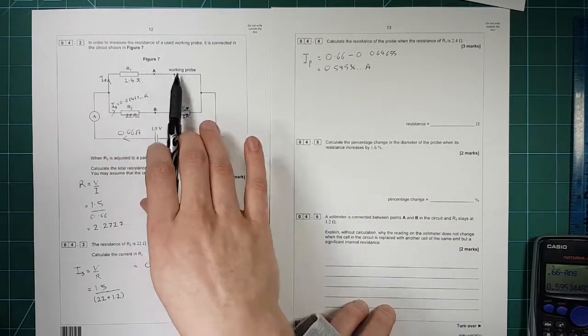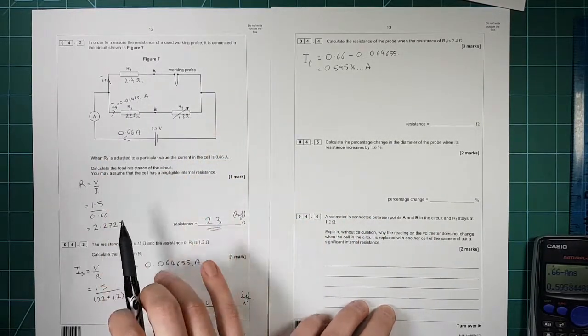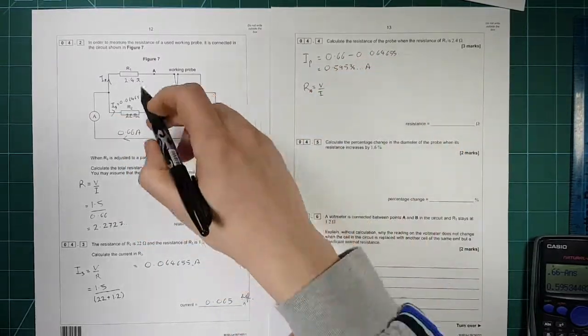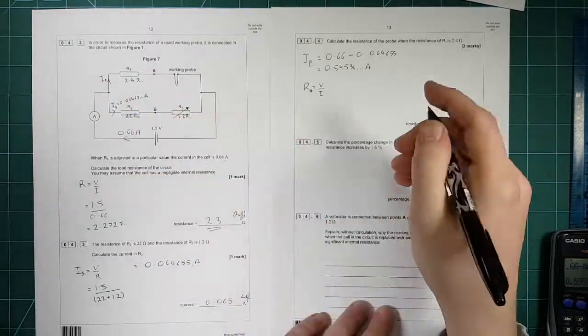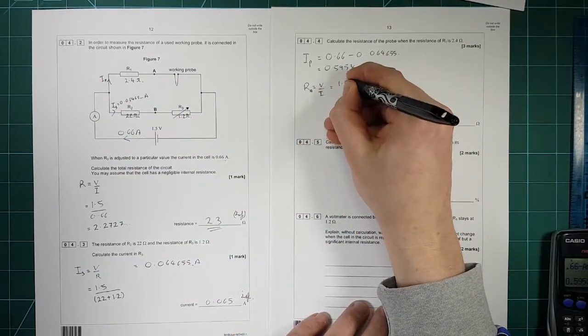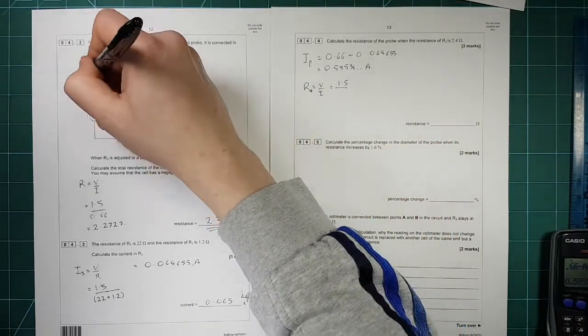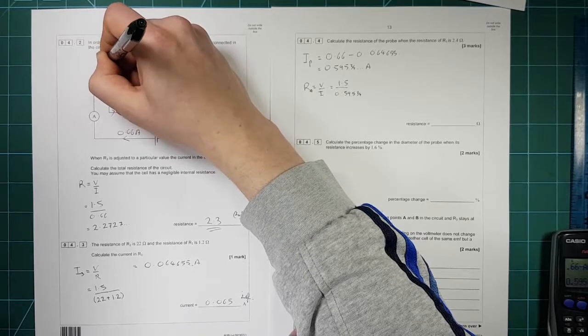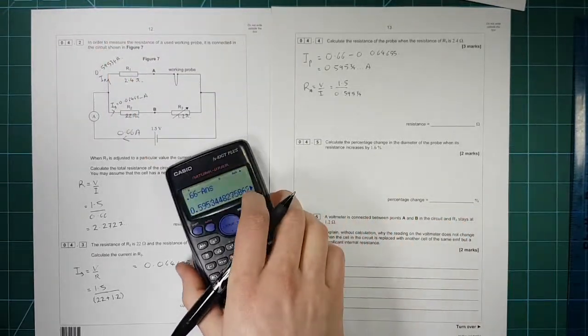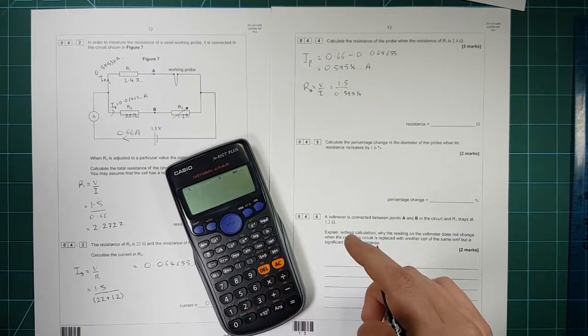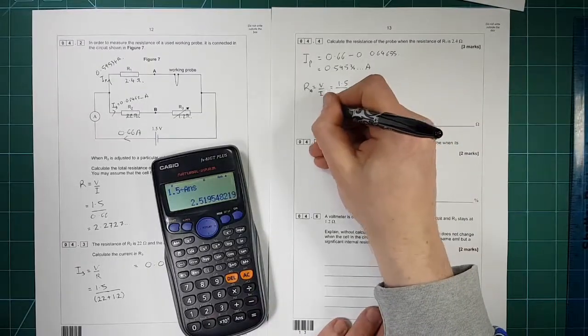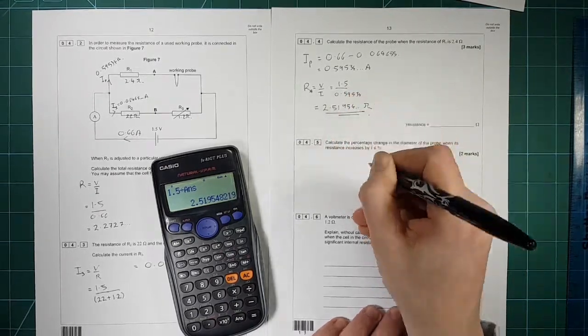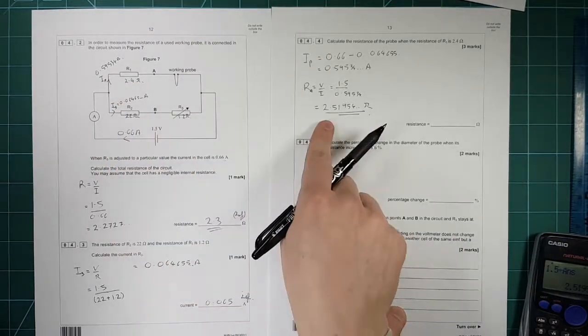Now we can work out the resistance of this entire branch here. So we know the potential difference across it. So R is equal to V over I. So this is the total resistance of branch A. That's 1.5 volts divided by the current that's going through this, which is 0.59534 amps going that way. So we need to do 1.5 divided by that answer. And hopefully that gives us a number bigger than 2.4. Yes, it does. So that's 2.51954 ohms. So that's the resistance of this entire branch here.